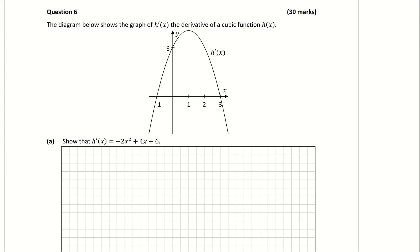Question 6. The diagram below shows the graph of h'(x), the derivative of the cubic function h(x). Part A wants us to show that h'(x) is equal to -2x² + 4x + 6. So we're basically doing this from the graph.